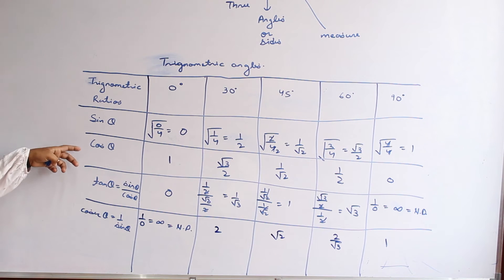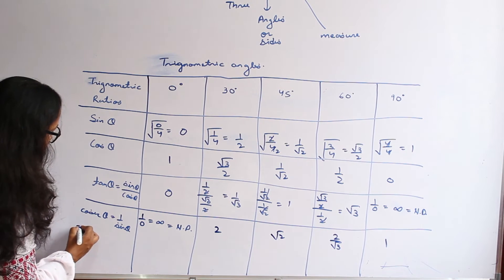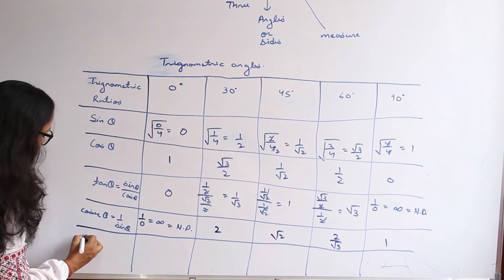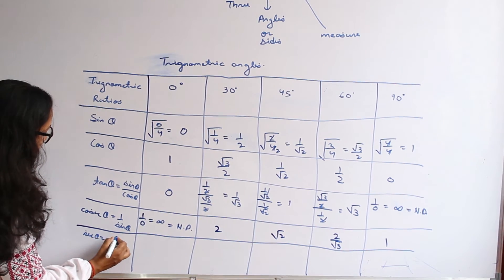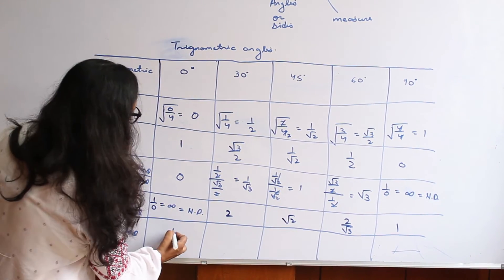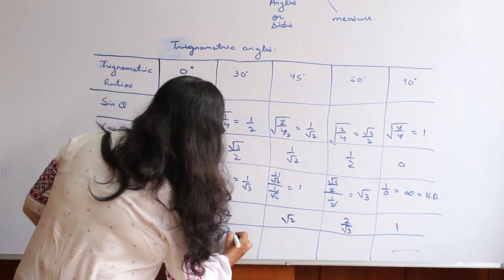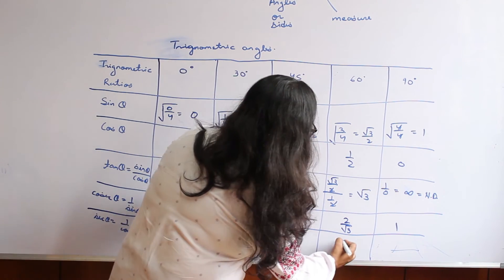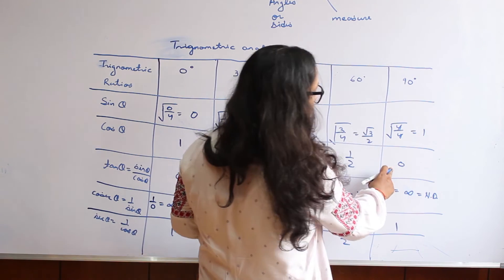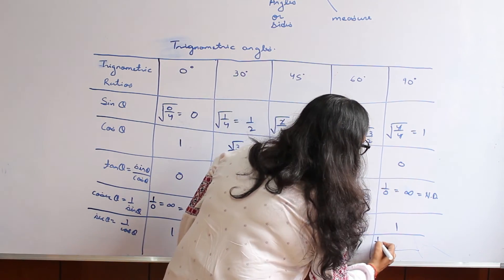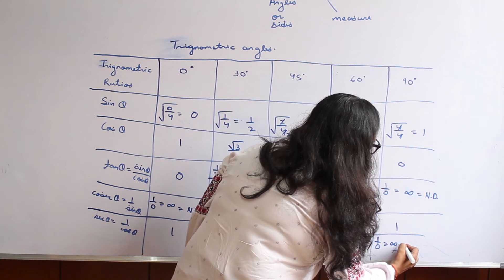Similarly, secant theta is the inverse of cos theta — that is, 1 over cos theta. Its values are: 1, 2 over root 3, root 2, 2, and at 90° we get 1 over 0, which is infinity — not defined.